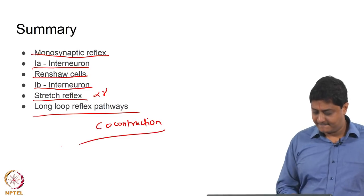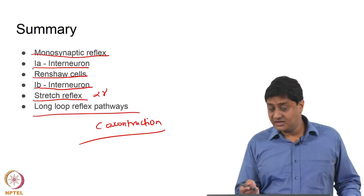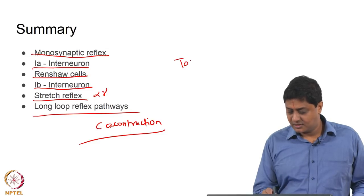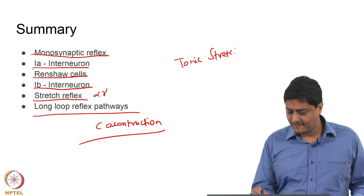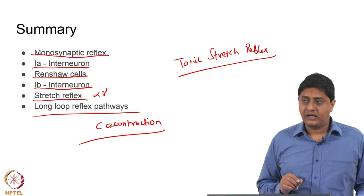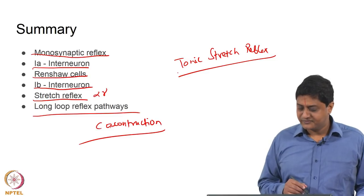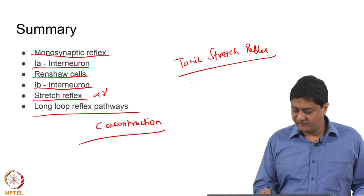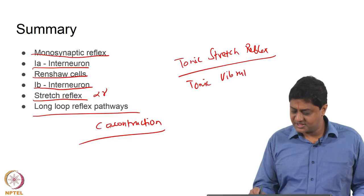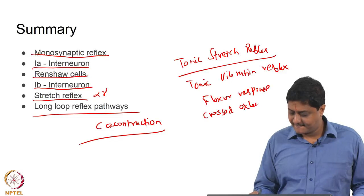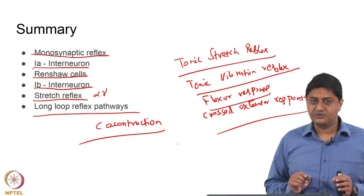Topics still to be covered in future classes include co-contraction, oligosynaptic and polysynaptic reflexes, tonic stretch reflex, tonic vibration reflex, and more details on the flexor withdrawal and crossed extension responses. With this, we come to the end of this class.